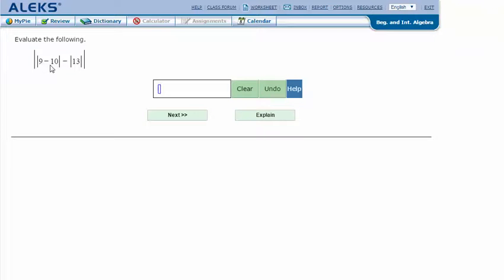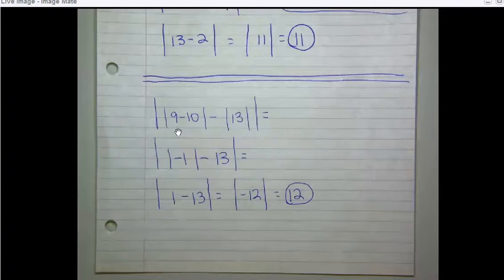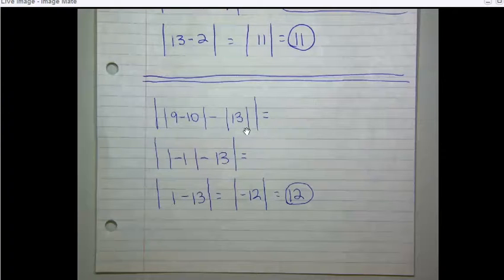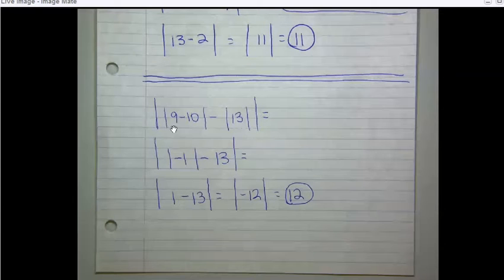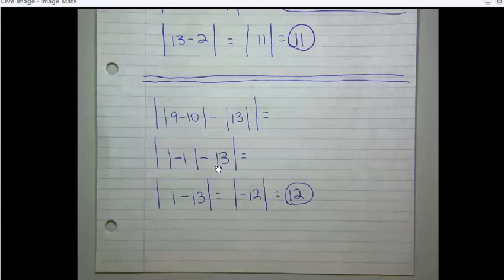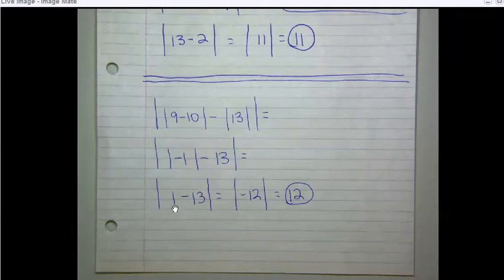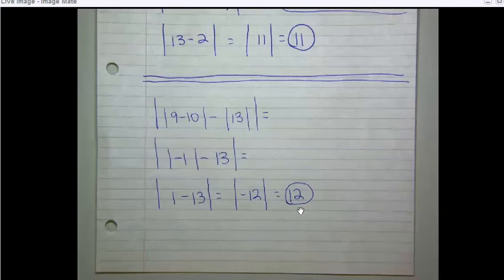Evaluate the following: the absolute value of 9 minus 10, minus the absolute value of 13, and then the absolute value of that entire answer. First I'll solve the innermost absolute values: 9 minus 10 is negative 1, and the absolute value of 13 is 13. The absolute value of negative 1 is 1. So now we have 1 minus 13, which is negative 12, and the absolute value of negative 12 is positive 12.